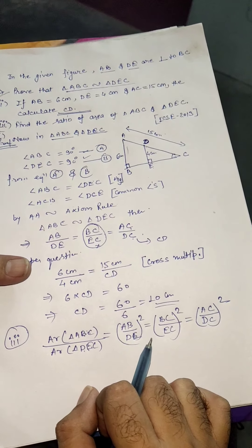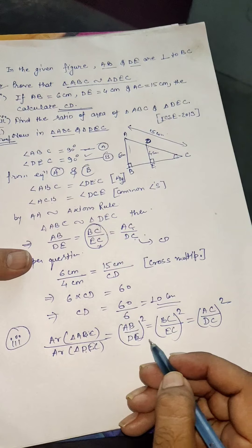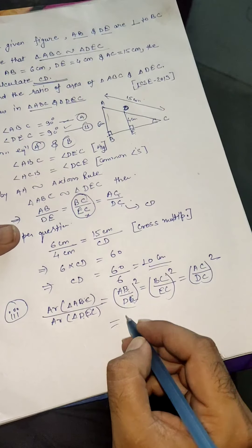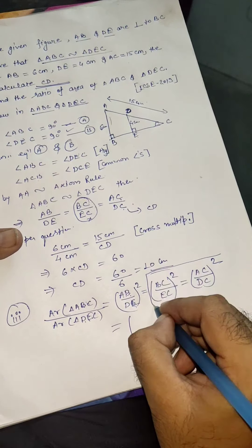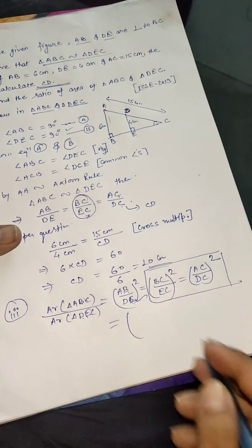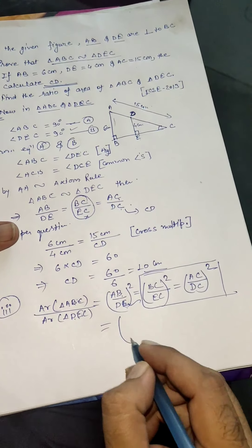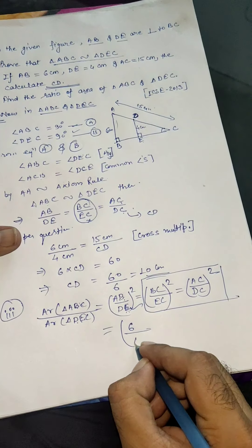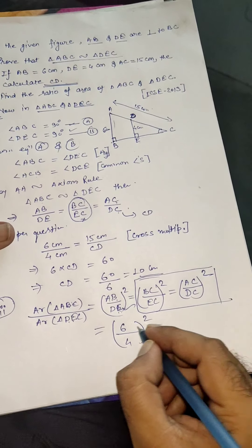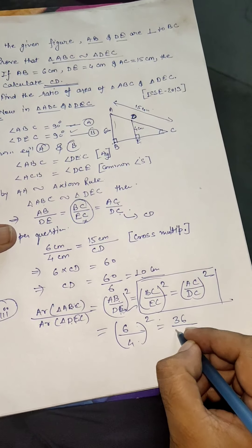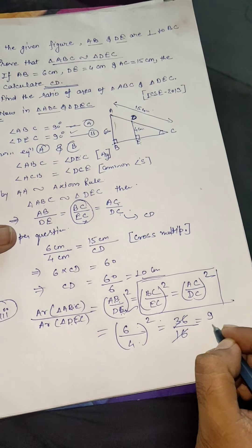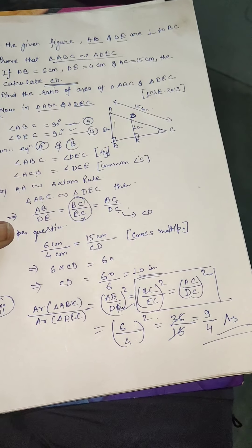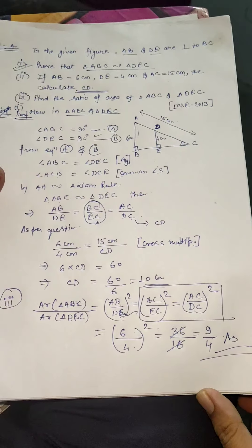AB and DE are the given sides, so we use those. AB is 6 and DE is 4, so the ratio is (6/4)² = 36/16. Simplifying, 36/16 = 9/4. Therefore, the ratio of the areas is 9:4. That is the required answer. You can take a screenshot if you want.